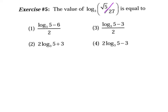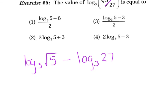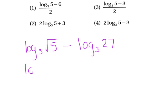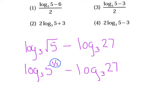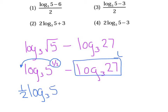The one half can travel and become the coefficient, so we get one half times log base 3 of 5. For the second term, I'm going to evaluate it: 3 raised to what power equals 27? Three raised to the third power equals 27. Going back to match the appropriate choice — it's a little tricky, but the first choice is equivalent because if you divide both terms by 2, you get the 3 we have. So that's a match.